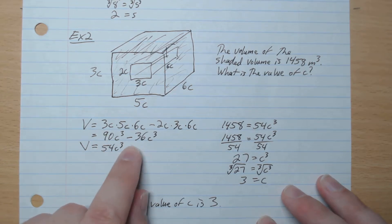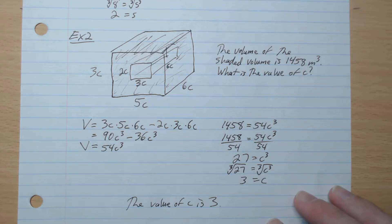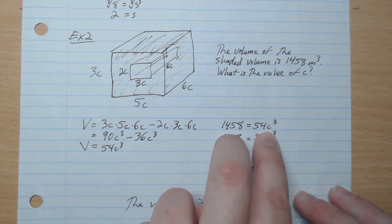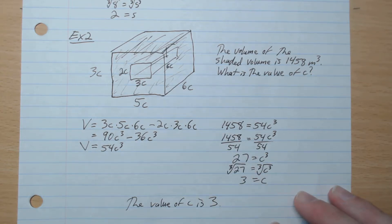So we get 90c³ minus 36c³, which gives 54c³. And so 54c³ is equal to 1458. Divide by 54 on both sides,